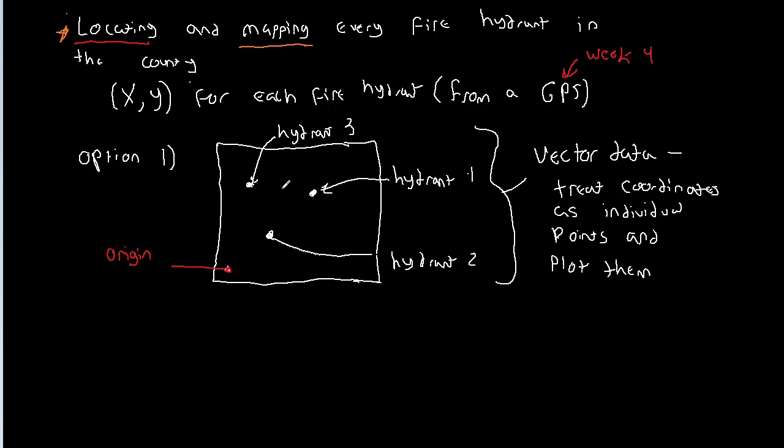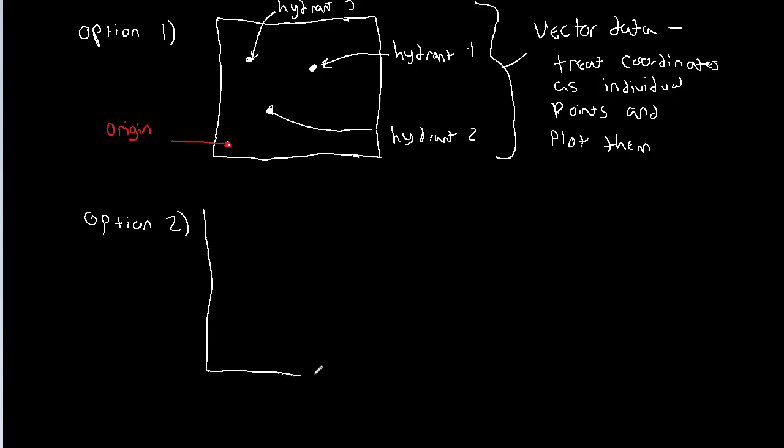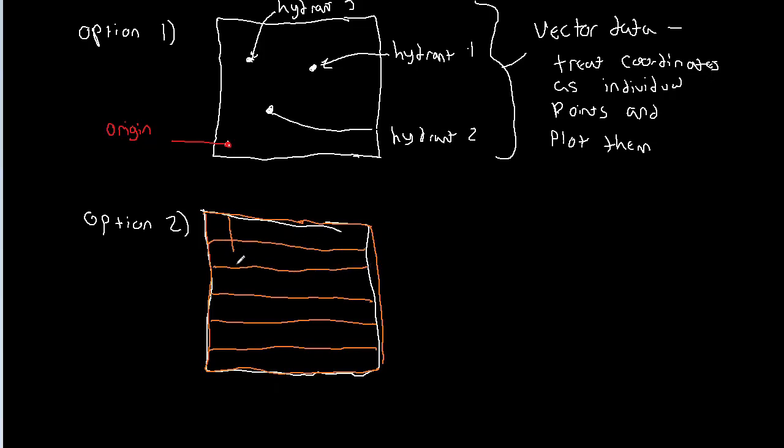So let's instead say we wanted to go with the second option, option two. With option two, what we do is we have our area again. But this time, instead of having an origin and plotting the points, I'm going to do this in a different color. Instead what we do is we take the area, which I've highlighted in white here, and we break the area up into evenly sized cells.